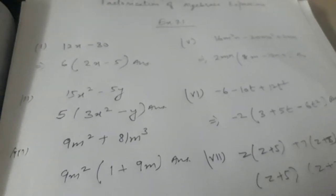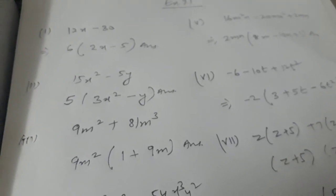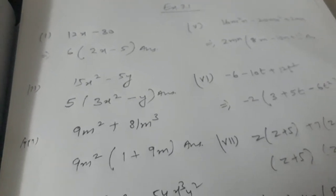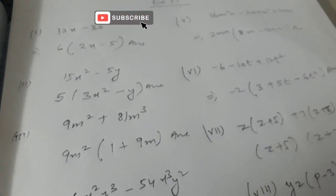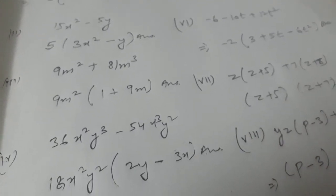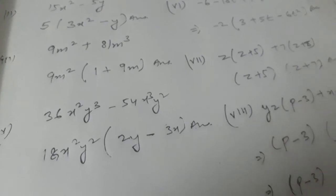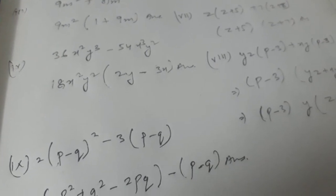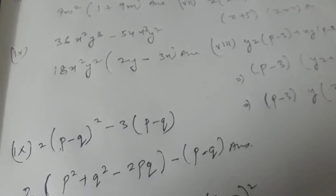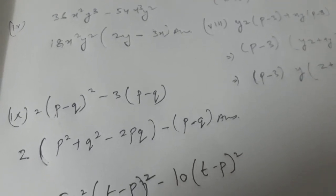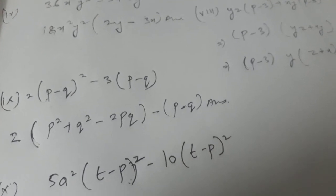I hope all questions 1 to 8 of Exercise 7.1, Chapter Factorization of Algebraic Expressions, publication house Goel Brothers Prakashan, Class 8 are clear. If there is any doubt in any question you can ask me by commenting in the comment box. If you like my video or if it is helpful to you, hit the like button, subscribe to my channel, and share as much as possible. Thanks a lot.